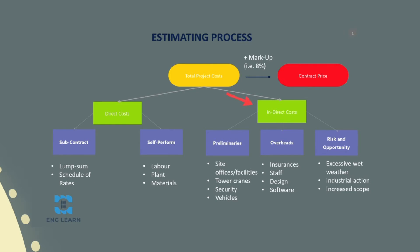Next, we need to determine our indirect costs. These will consist of preliminaries, overheads and our risk and opportunity. We'll quantify our preliminary costs based on identifying all of our preliminary cost items and quantifying them. We'll determine our overhead costs by creating our project organisation chart and estimating staff salaries. And finally, we'll work out what contingency we need to allow for by developing our risk and opportunity register.